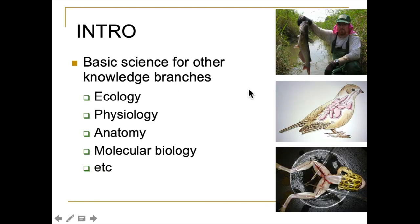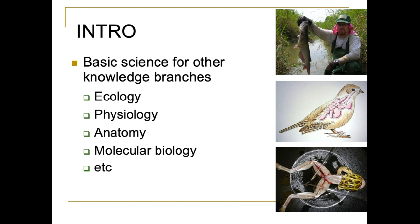The third reason we need taxonomy is that it is the basic science that helps other sciences like ecology, physiology, and many other branches of biology. For example, if we study this fish and don't have its scientific name, we cannot read the relevant papers — that is why we need the taxonomic framework.